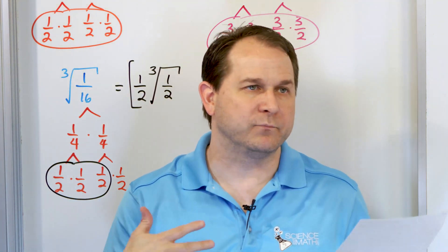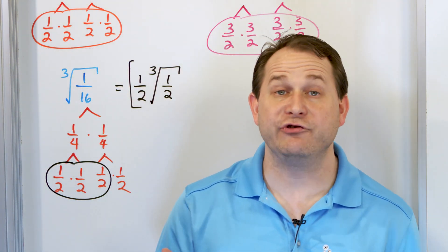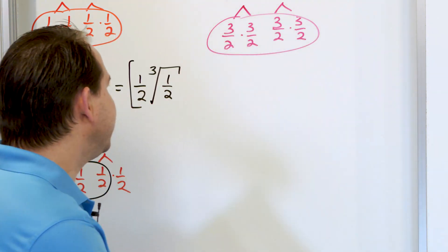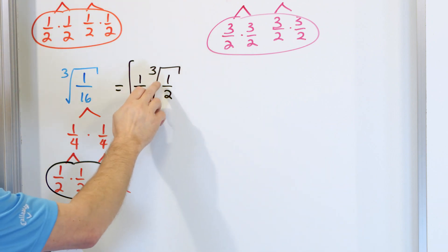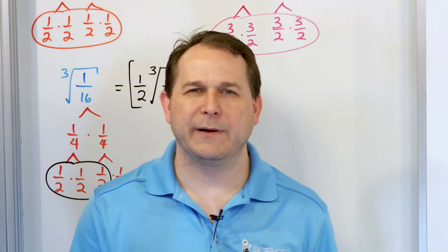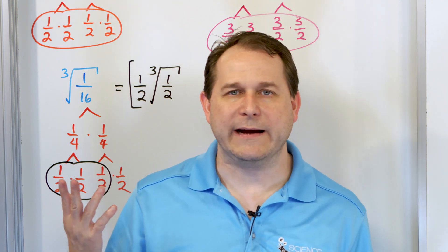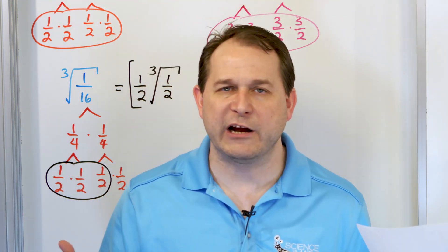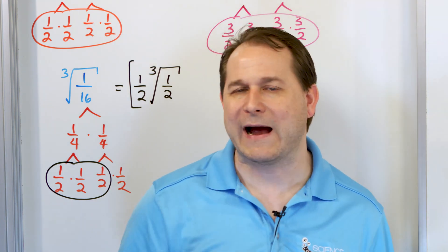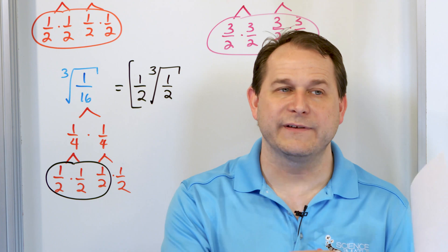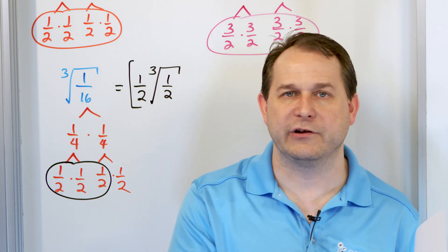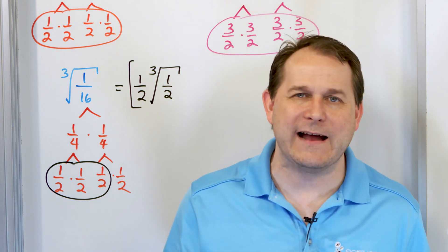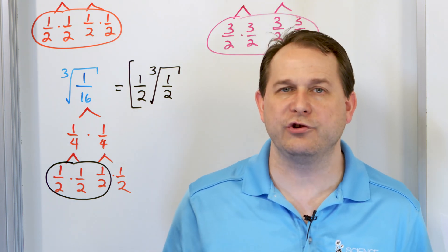When simplifying radicals, in general you don't want fractions underneath your radical. So leaving the answer as 1/2 times the cube root of 1/2 — it's not wrong, it's absolutely correct — but as a matter of convention, you generally don't want fractions underneath radicals. Also, in general, you don't want radicals in the denominator of a fraction, like 1 over the square root of 2. It's just a mathematical convention.